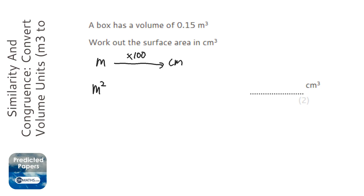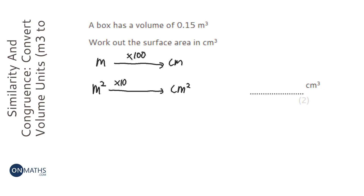But to get from metres squared to centimetres squared, we times by 100 per dimension. So we have two dimensions, so we times by 100 twice. And that is not the same as times 200 — you times by 100 times by 100, or times by 100 squared.